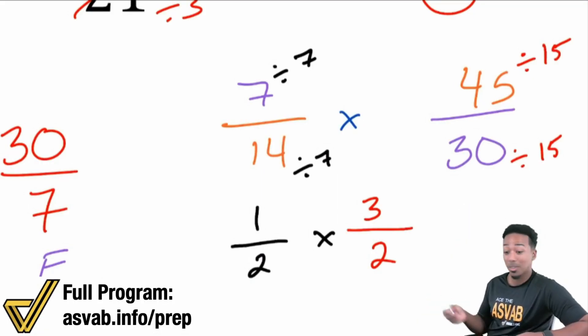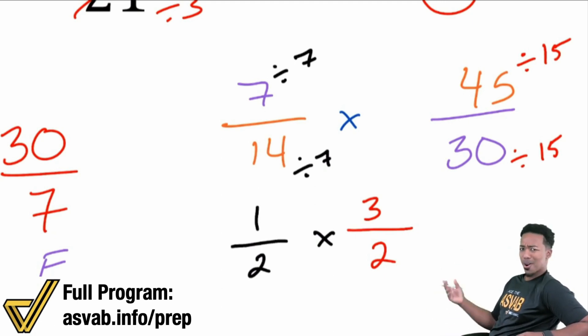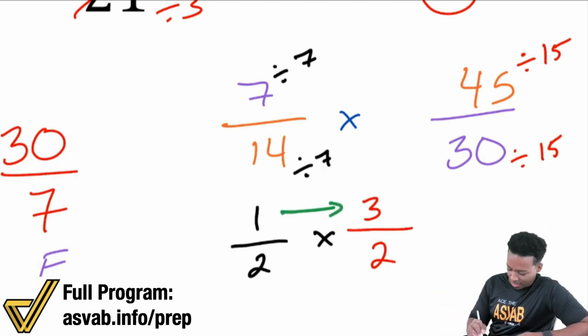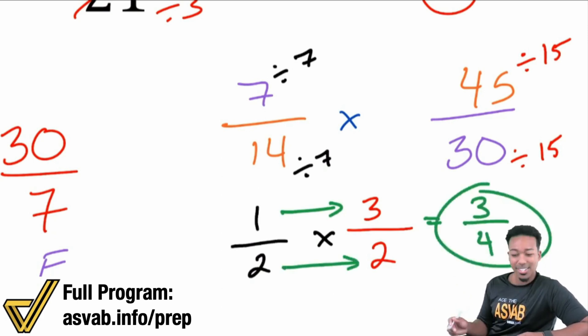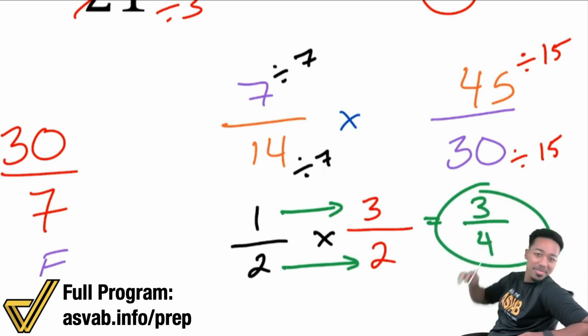And so now we can actually multiply. Oh, that's so hard, right? That's super hard. That's really hard. 1 times 3? I don't know. Let's find out. 1 times 3? That's 3. 2 times 2? That's 4. And there's our answer. 3 over 4? Right there. And there we are.